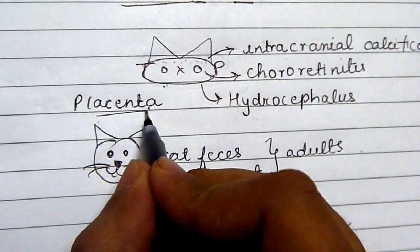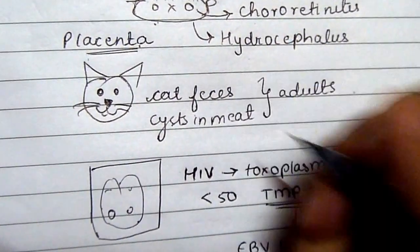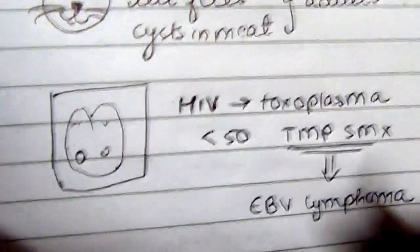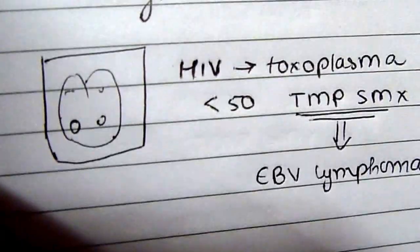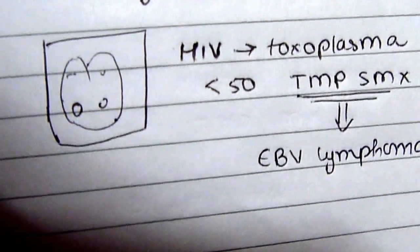For transmission, we said that for neonates it is transplacentally transmitted. However, in adults it can be cat feces or cysts in meat. In HIV-positive patients, your differentials will include neurocysticercosis for multiple ring-enhancing lesions and